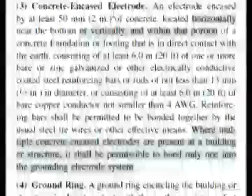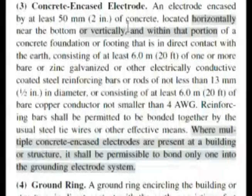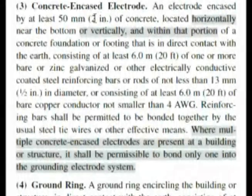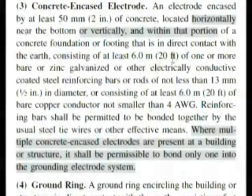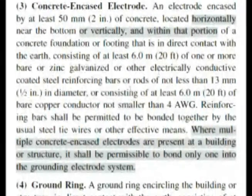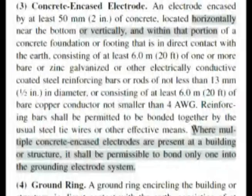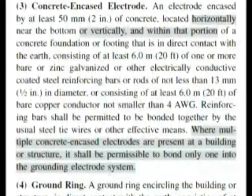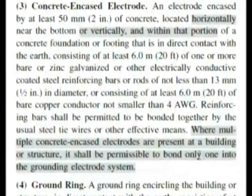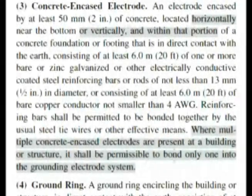We go down and look at this: concrete encased electrode, and that's what our question was asking us about. So here it is, and it's talking about at least two inches of concrete and it's 20 feet long. It's giving some number specs, but as you read down, here's really where our question is: Where multiple concrete encased electrodes are present at a building or structure, it shall be permissible to bond only one into the grounding electrode system. And this is almost word for word of our question.